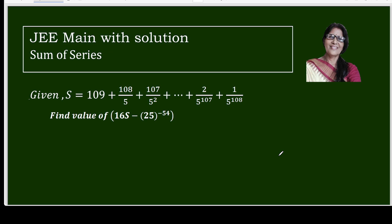Given: S equals 109 plus 108 over 5 plus 107 over 5 square and so on, plus 2 over 5 power 107 plus 1 over 5 power 108. Find the value of 16 times S minus 25 power negative 54.